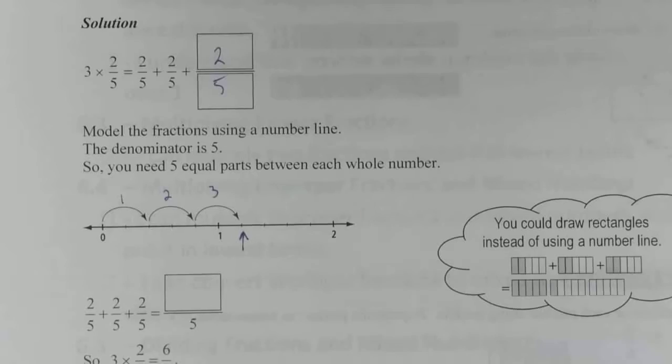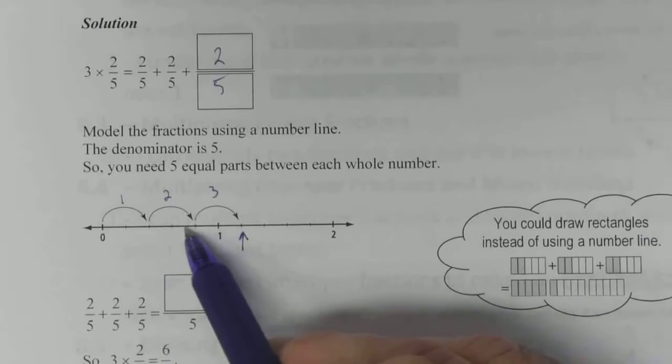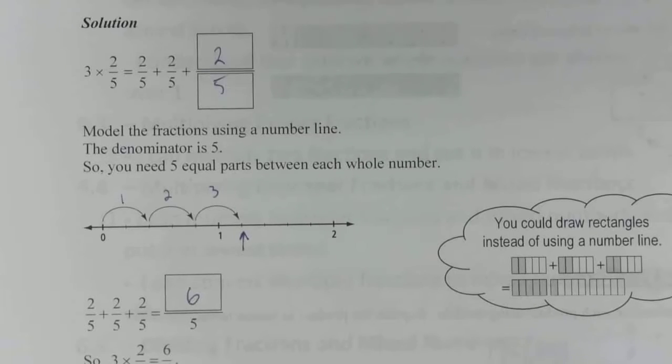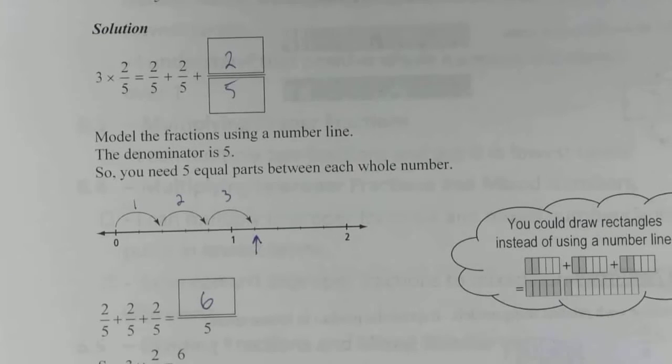which is one, two, three, four, five, six-fifths. Each space is the size of one-fifth, so if it takes six of them to get to where you're going, then you have six-fifths.